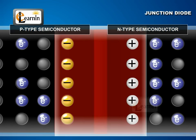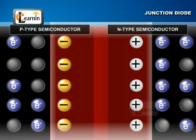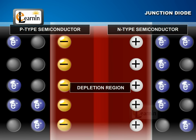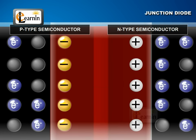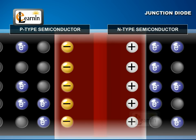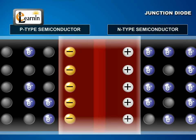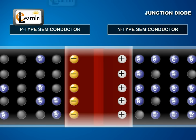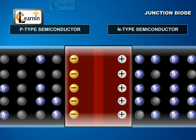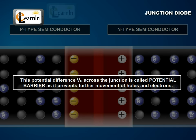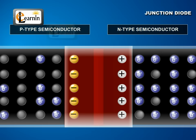The region close to the PN junction is depleted of mobile charge carriers and is called the depletion region. Since on either side of the junction J, stationary positive and negative charges exist, there is an electric potential difference of V-D between the edges 1 and 2 of D. This potential difference, V-D, across the junction is called the potential barrier, as it prevents further movement of holes and electrons. This combination described becomes a PN junction diode.